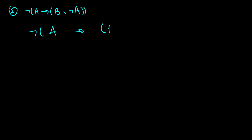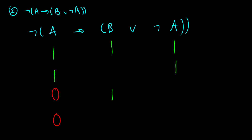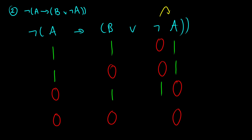For question 2, we have B or not A. Let's start this truth table. A will be 1, 1, 0, 0 and B will be 1, 0, 1, 0. I'll do the negation of A on the right side — taking the A column and reversing the truth values — giving us 0, 0, 1, 1.